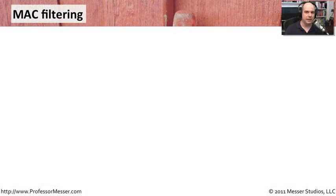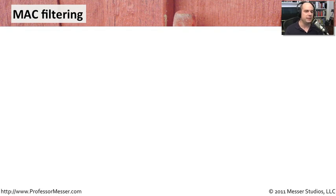We've now encrypted our data and chosen an authentication method so we can make sure that people who are allowed get onto the network and prevent those who aren't. There may be some other things we can configure in our wireless access point to help with security. Let's look at one of these.